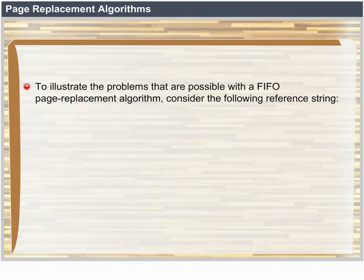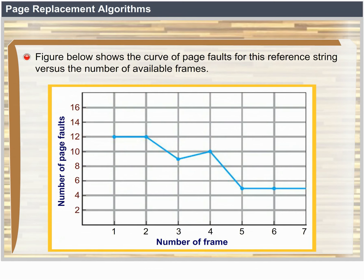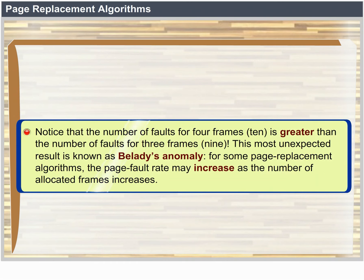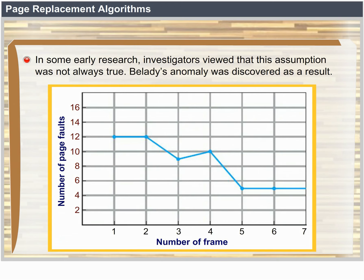To illustrate the problems with FIFO page replacement, consider the reference string 1, 2, 3, 4, 1, 2, 5, 1, 2, 3, 4, 5. Notice that the number of faults for 4 frames (10) is greater than the number of faults for 3 frames (9). This most unexpected result is known as Belady's anomaly. For some page replacement algorithms, the page fault rate may increase as the number of allocated frames increases. We would expect that giving more memory to a process would improve its performance, but investigators noticed this assumption was not always true. Belady's anomaly was discovered as a result.